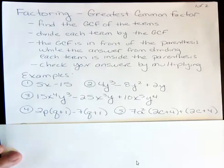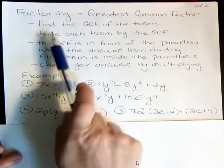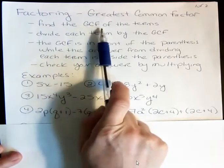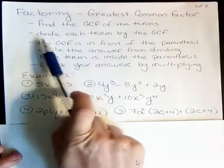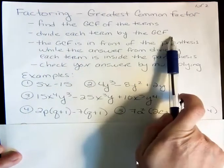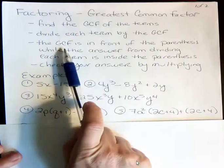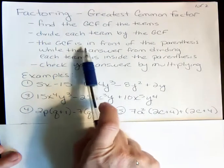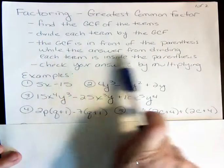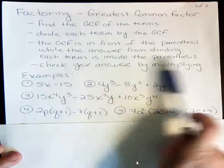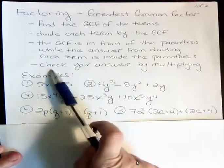When we say we're factoring out the greatest common factor, we need to find the greatest common factor of the terms, and then we divide each term by the greatest common factor. When we state the answer, the greatest common factor that you found in step one is in front of the parentheses, while the answer from dividing each term is inside the parentheses. And you can always check your answer by multiplying.